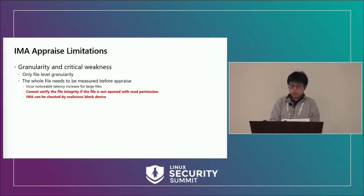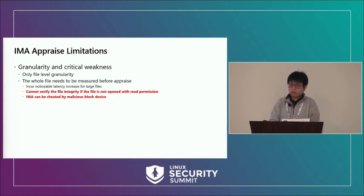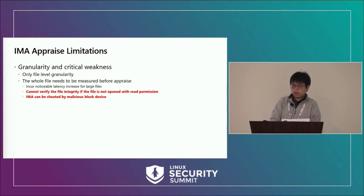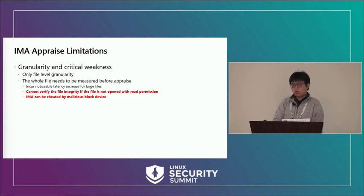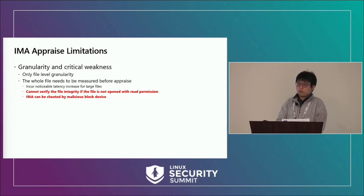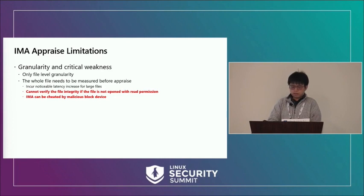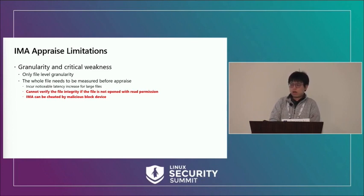The most critical issue is that IMA can be cheated by malicious block devices. A paper published last year detailed the actual attack. If we have a very large file that cannot fit into memory, during the measurement process the attacker can send good file content to IMA, which will then think the file is legitimate. But because the file cannot fit into memory, when the user wants to use it the content must be re-read from the block device, at which point the block device can send arbitrary malicious data to the kernel. This is because IMA is above the file system level and cannot do an integrity check on every disk operation.